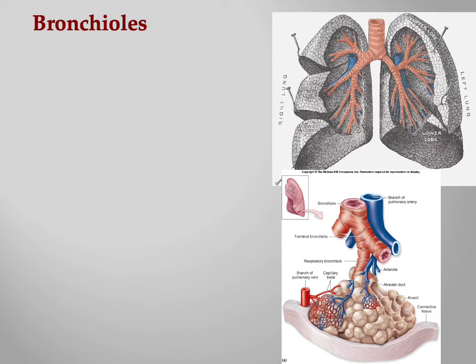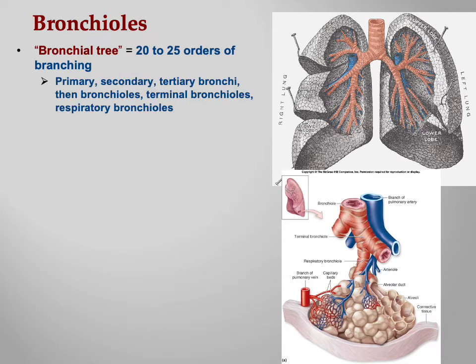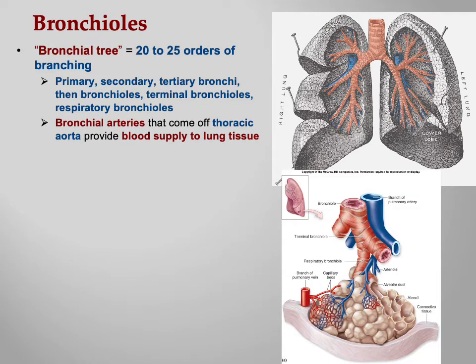Finishing up our introduction to respiratory anatomy — we started in the pharynx, went down through the larynx, trachea, primary bronchi, secondary, tertiary, and now we're down to the bronchioles, the tiniest of the tubes. The bronchial tree has 20 to 25 orders of branching: primary, secondary, tertiary bronchus, then bronchioles, terminal bronchioles, and finally respiratory bronchioles, which actually have alveoli attached to them.